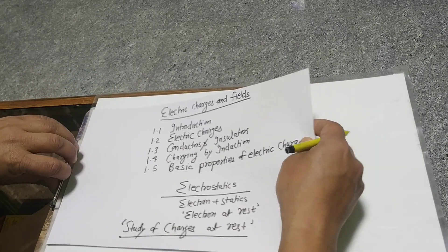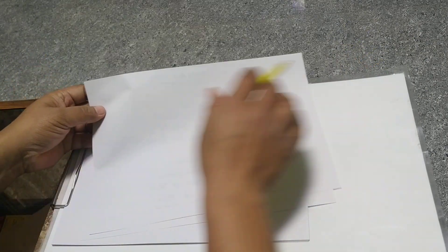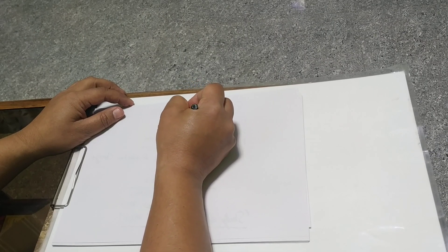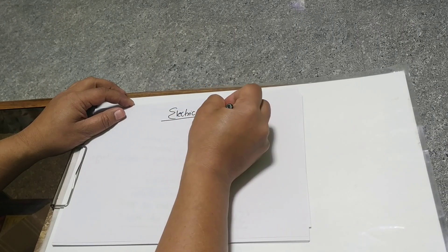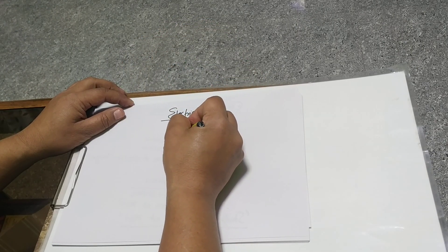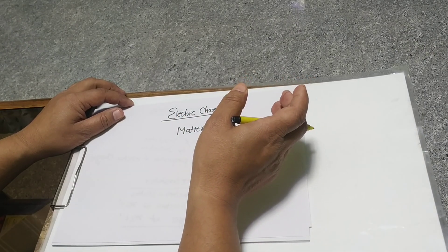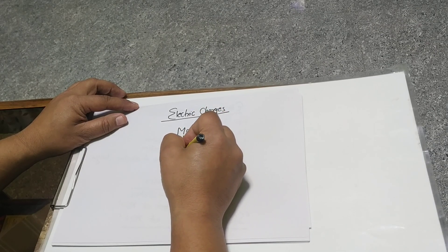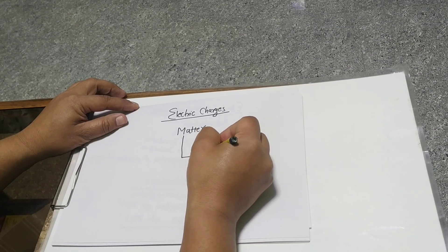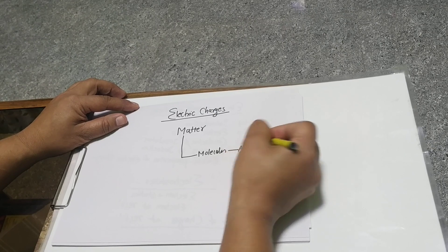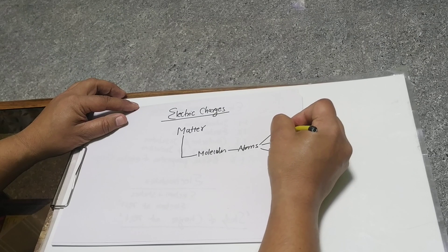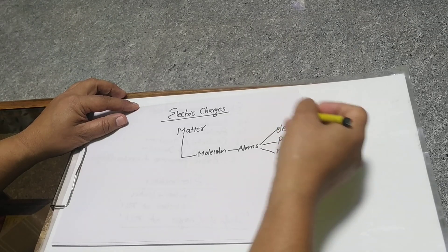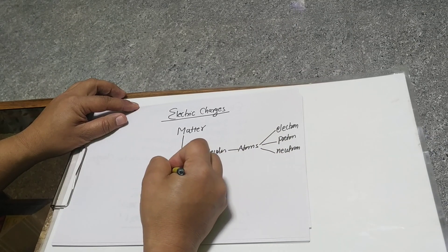So what are electric charges? We will discuss how the electric charges have come about. When we talk about matter, we have three subatomic particles: one is electron, one is proton, and another is neutron. These three particles are the subatomic particles which consist of charge.